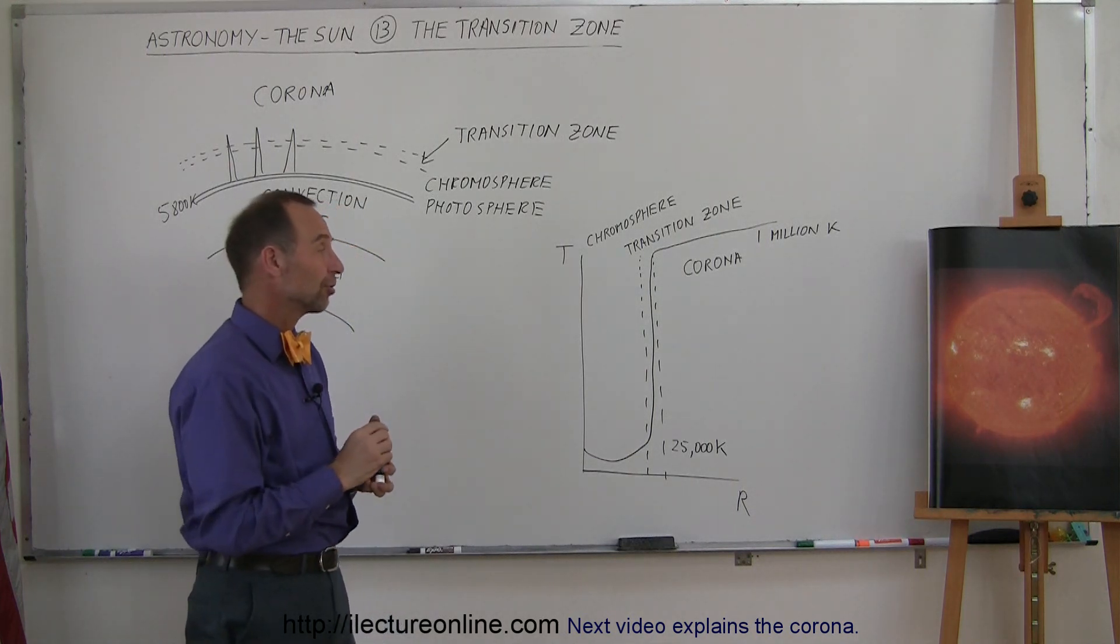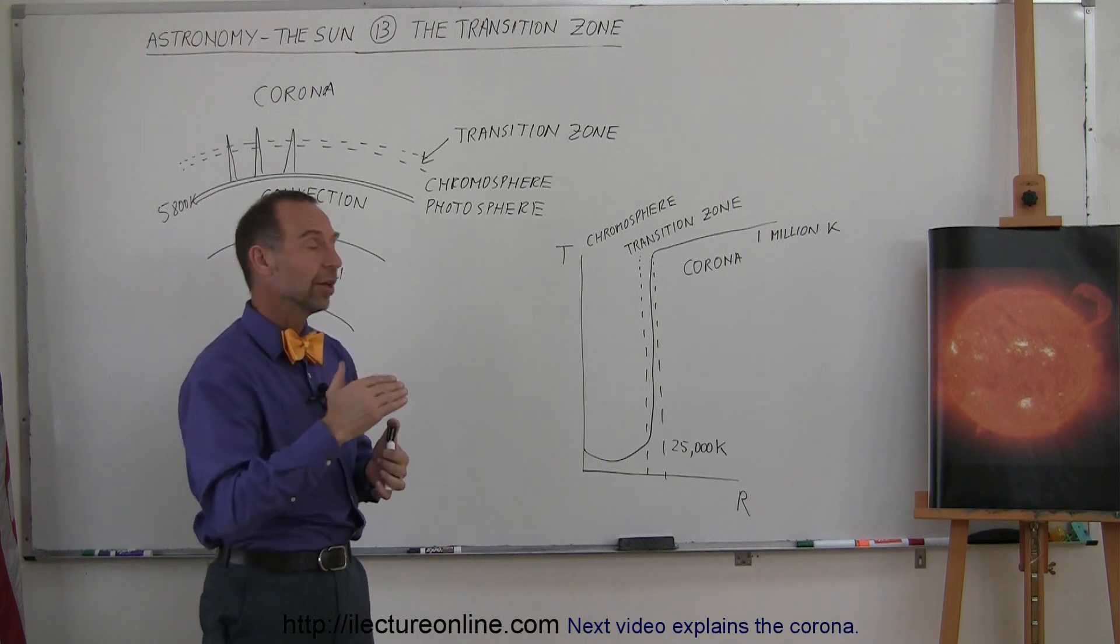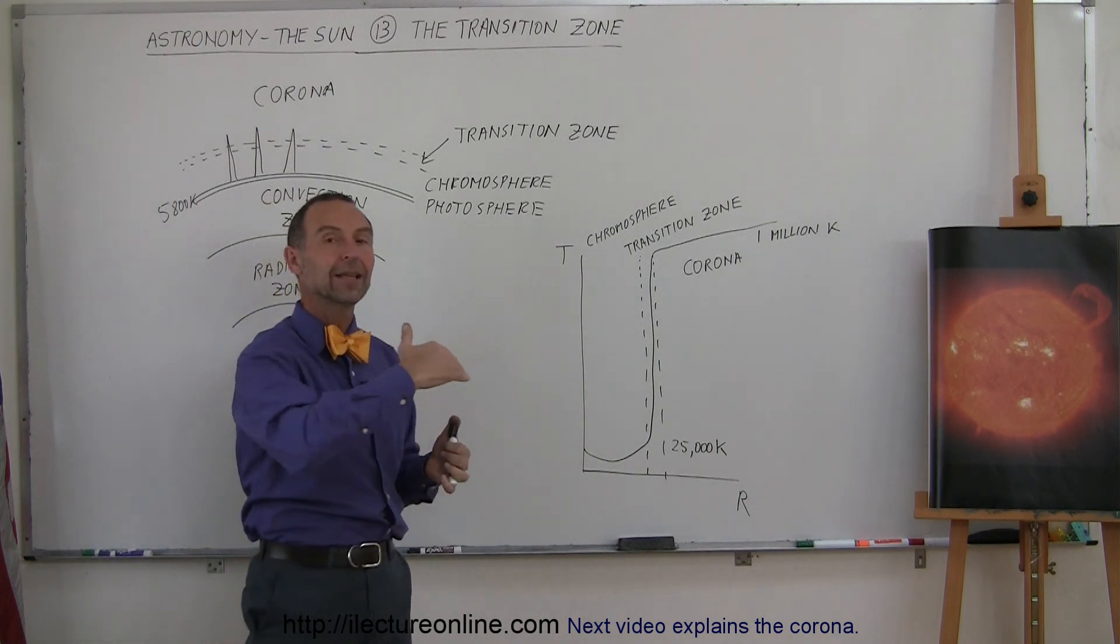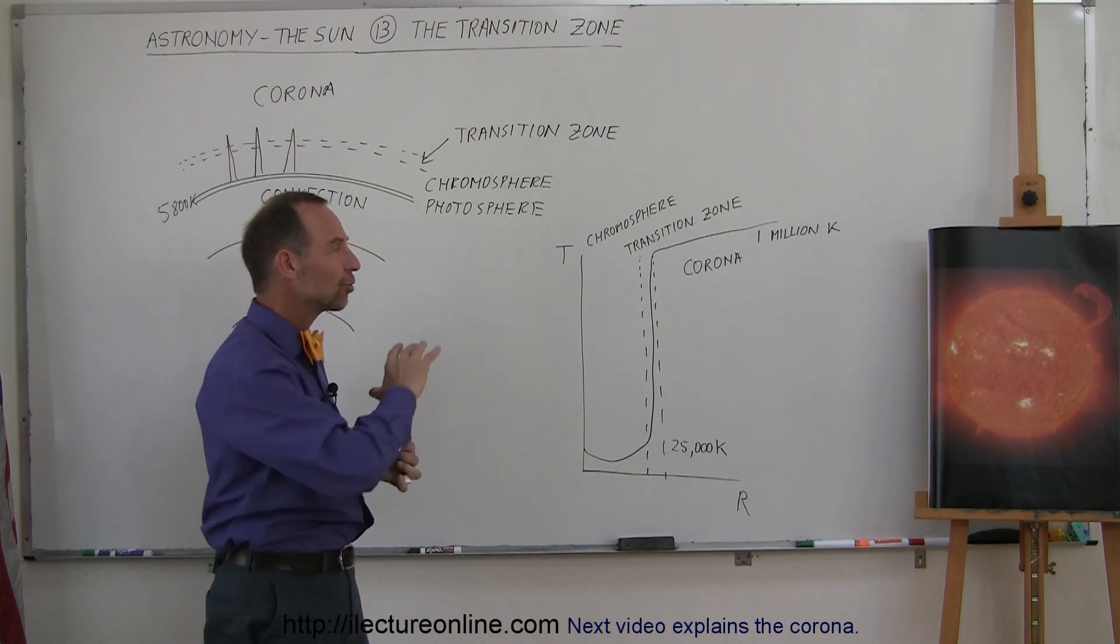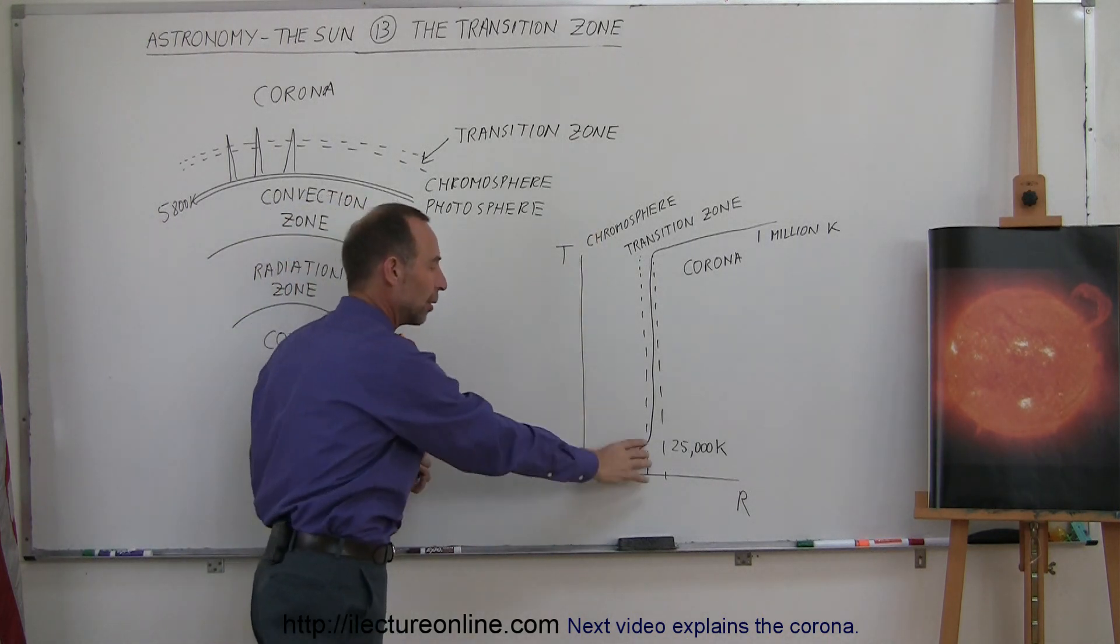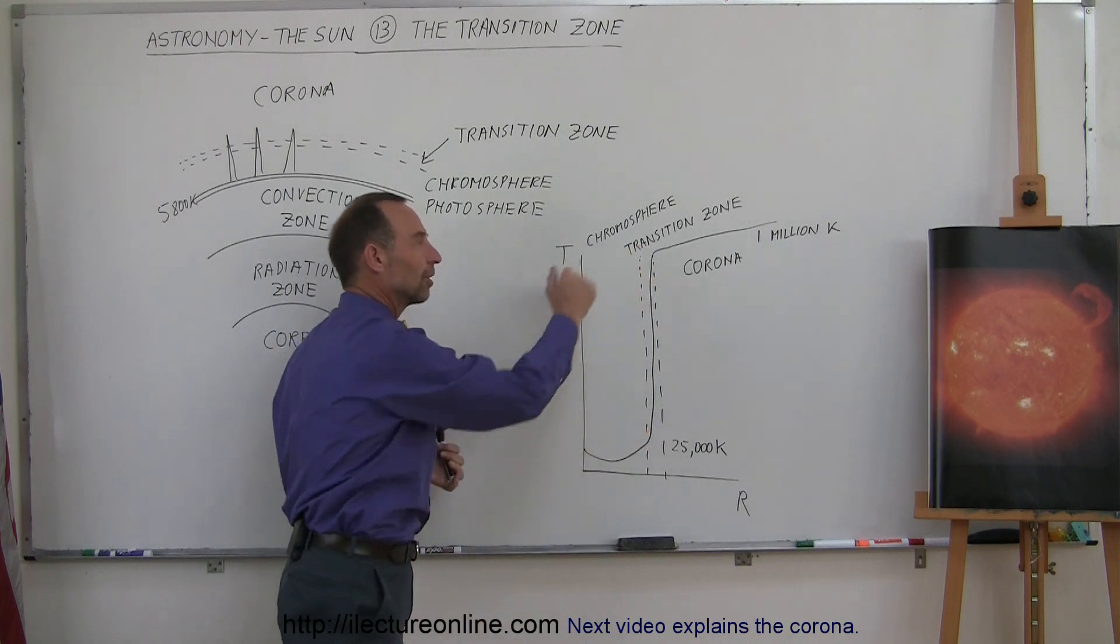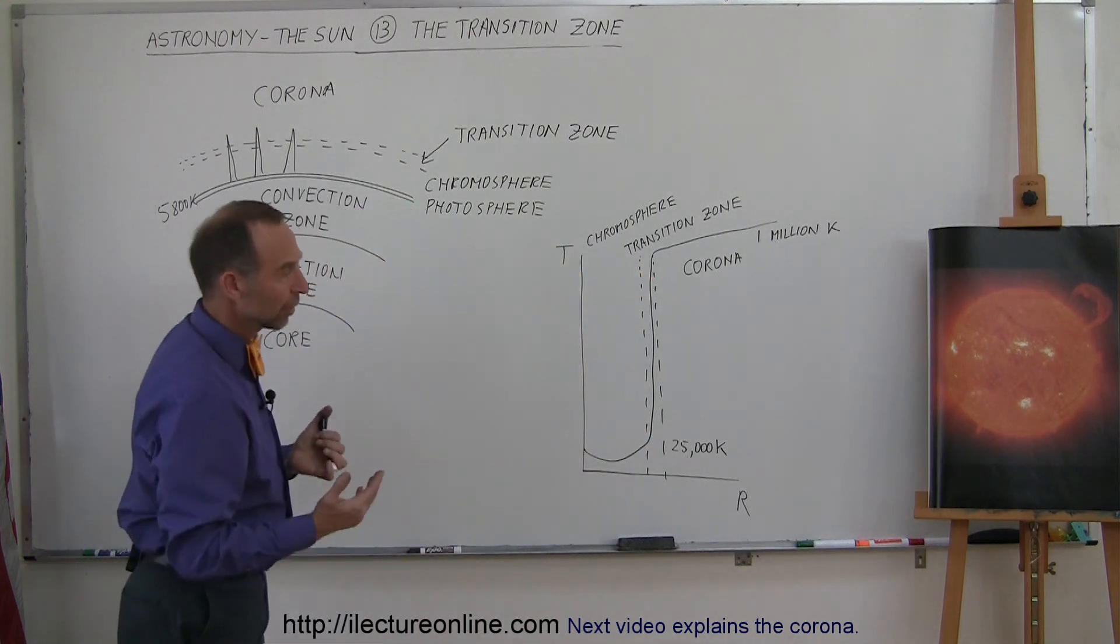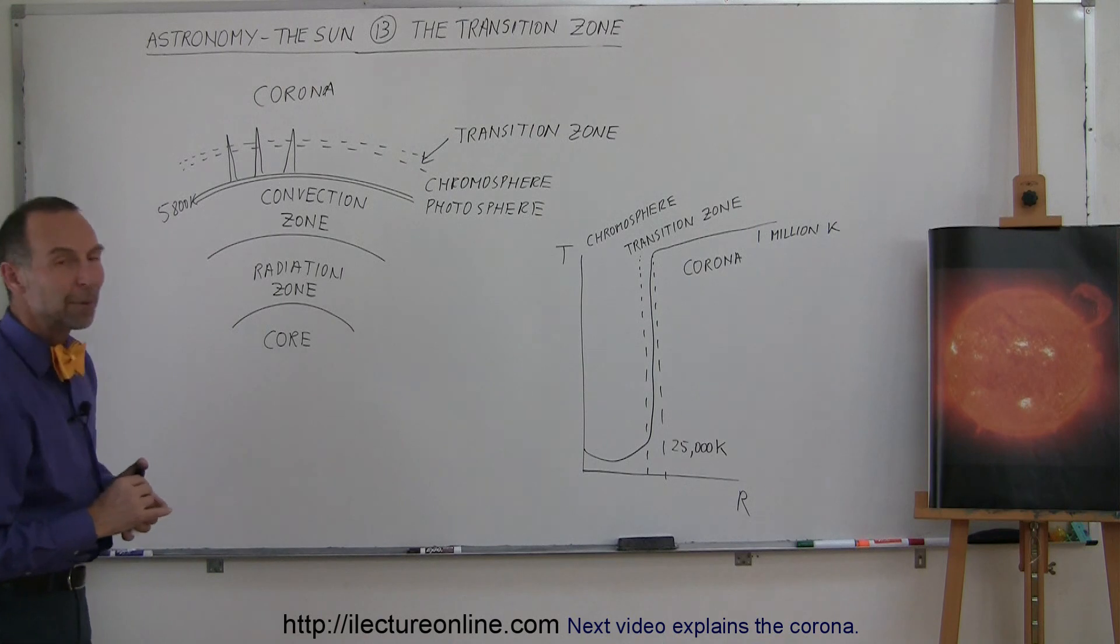In the future we are sending some spacecraft towards the sun to get within just 10 sun radii away from the sun to try and figure out why the corona is so hot and why we have that transition zone going from relatively low temperatures to extremely high temperatures. We don't know. We'll find out maybe one day.